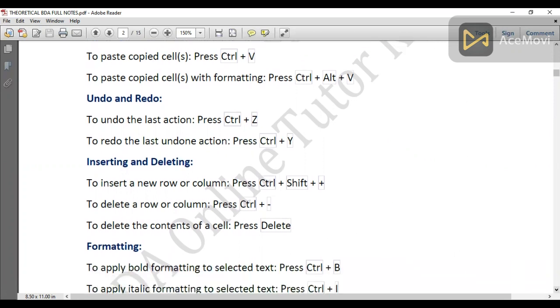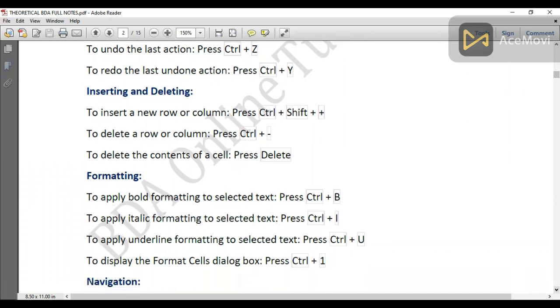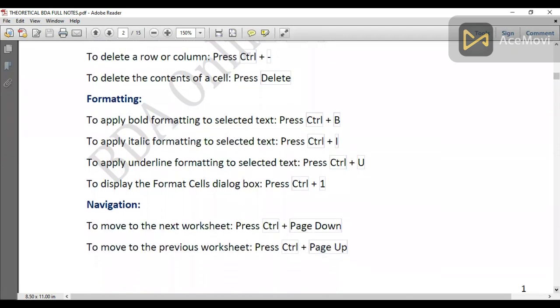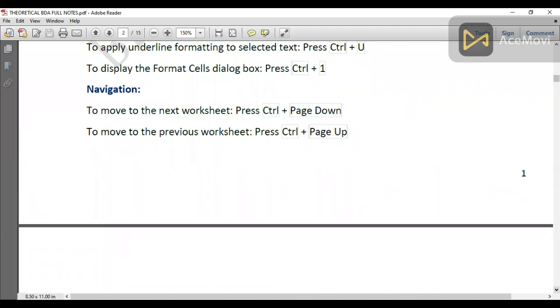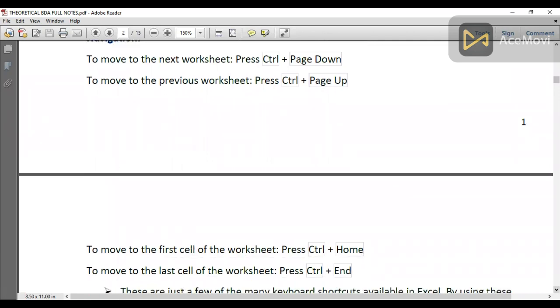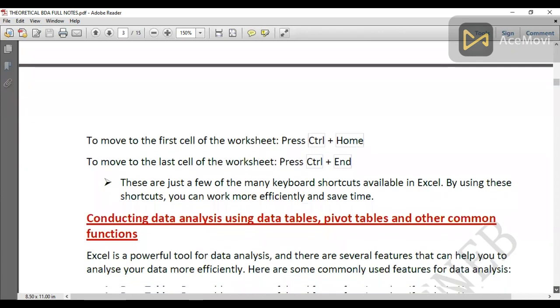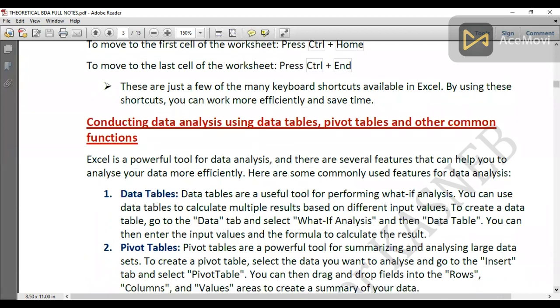For formatting: to make text bold is Ctrl + B, for italics Ctrl + I or Alt + H + 2, to apply underline is Ctrl + U, to display the format box Ctrl + 1. For navigations: Ctrl + Page Down and Ctrl + Page Up to move between worksheets, Ctrl + Home to move to the first cell, and Ctrl + End to move to the last cell.